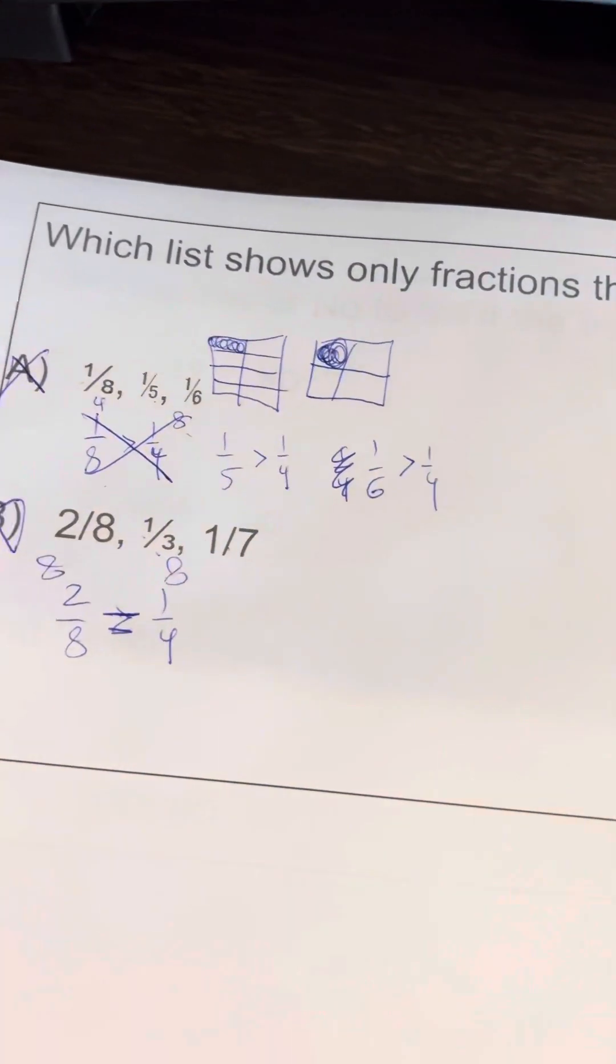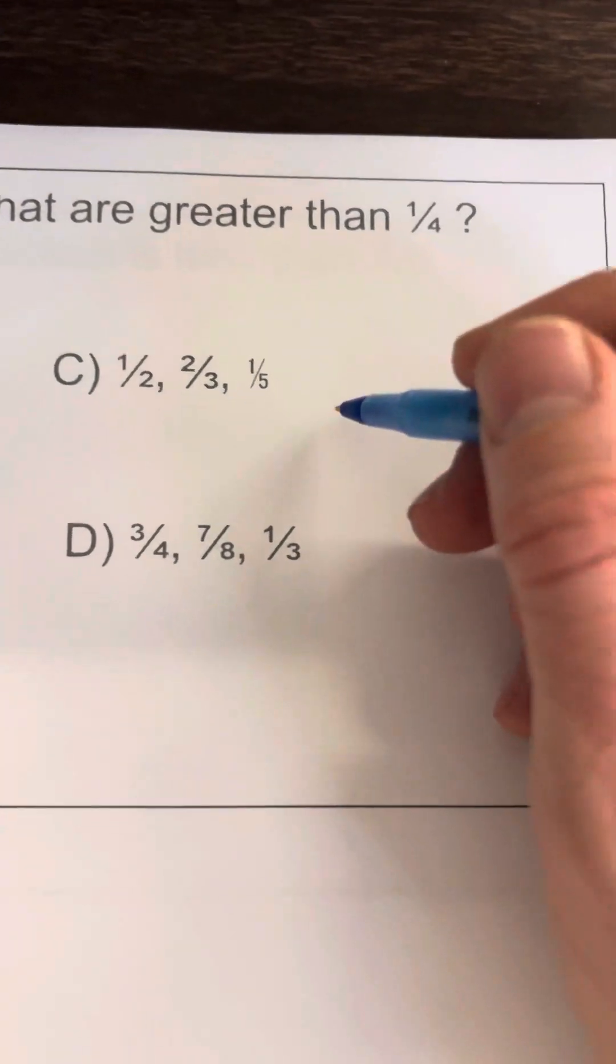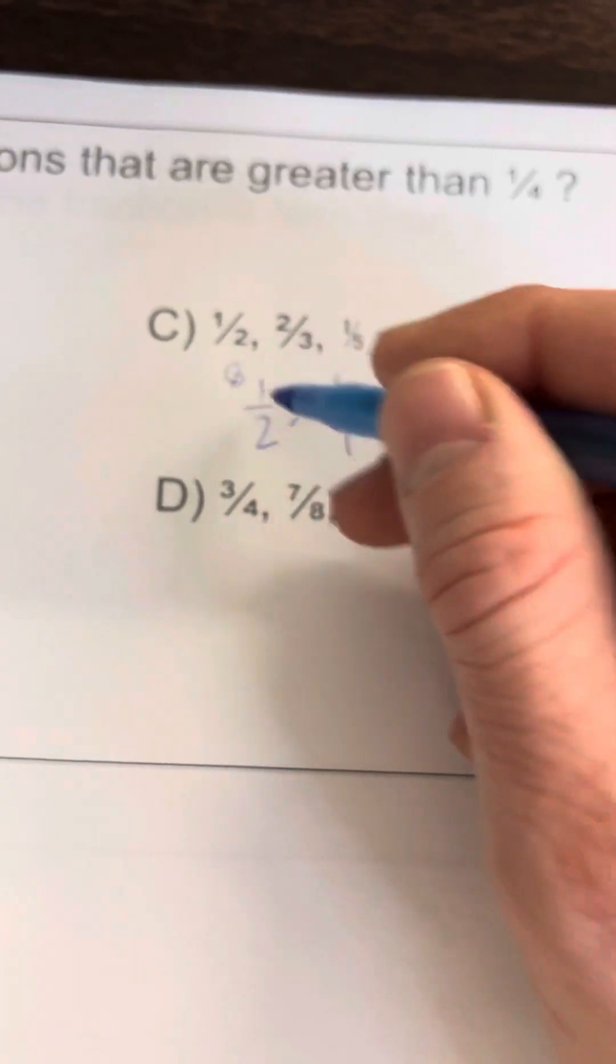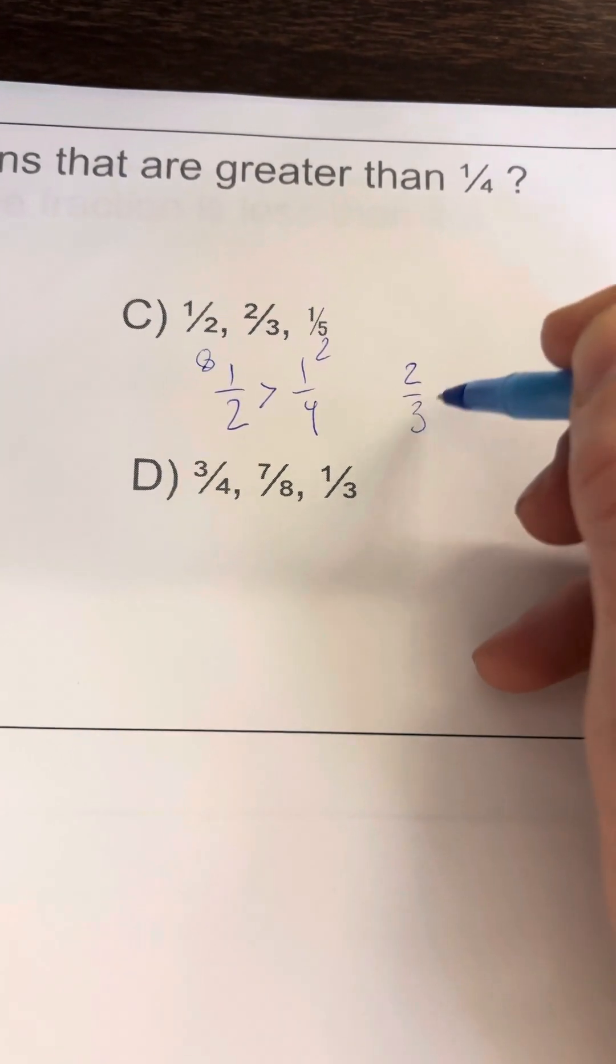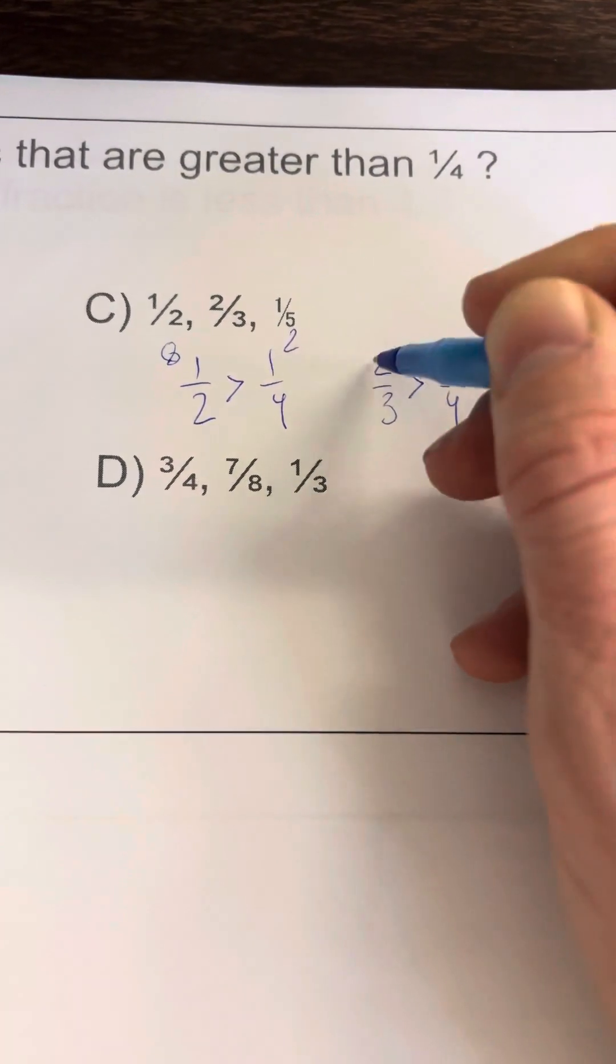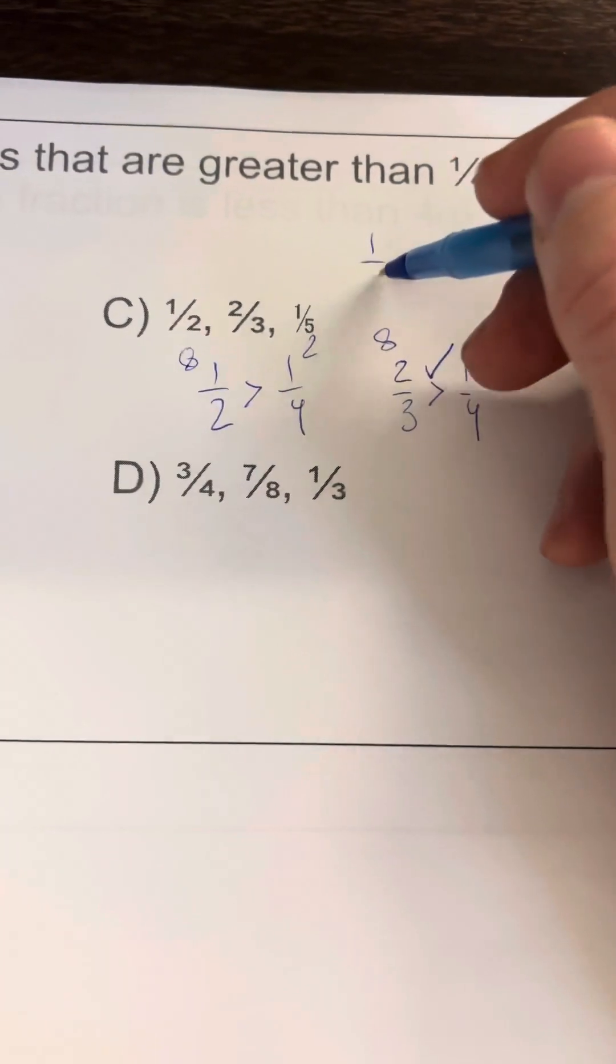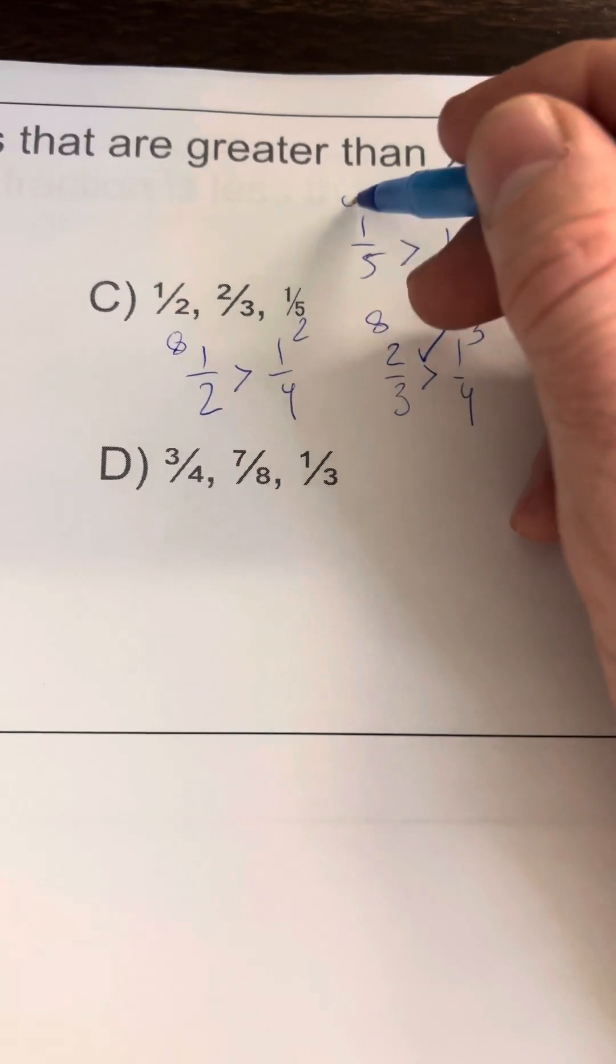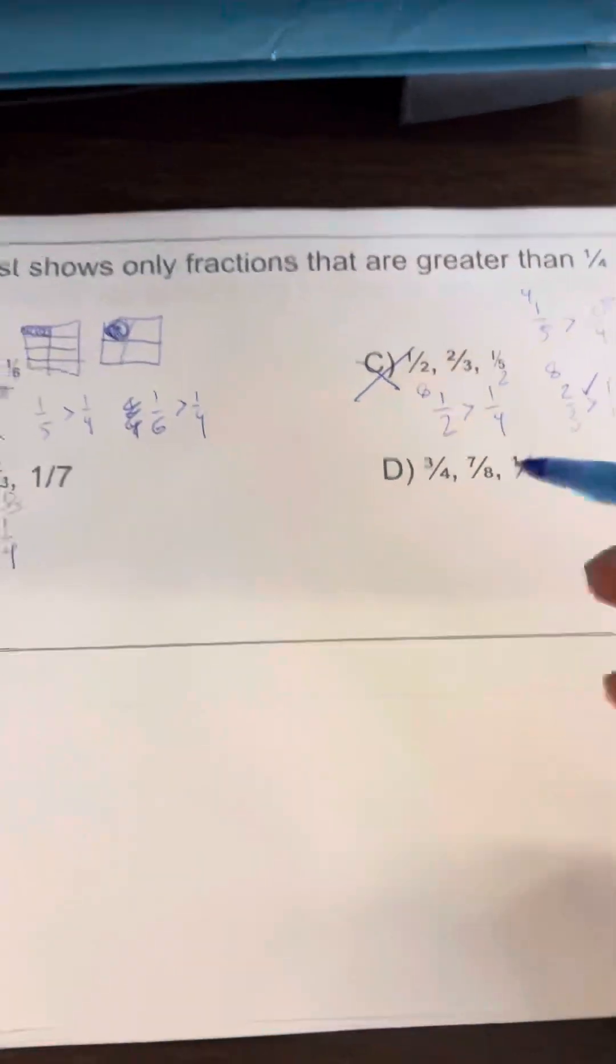Is one-half greater than one-fourth? Let's check—it is. Let's check two-thirds: 4 times 2 is 8, 3 times 1 is 3. That's good. Let's check one-fifth. Is one-fifth greater than one-fourth? It is not—not true. So I know my answer must be D, but we're gonna of course check.